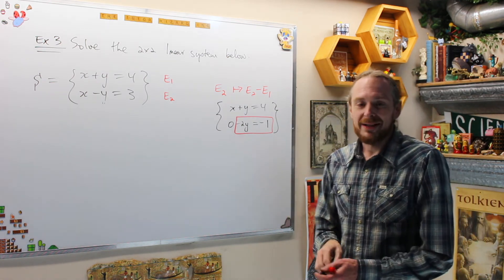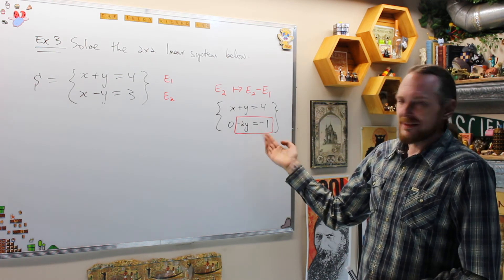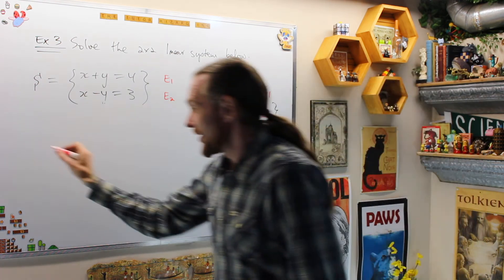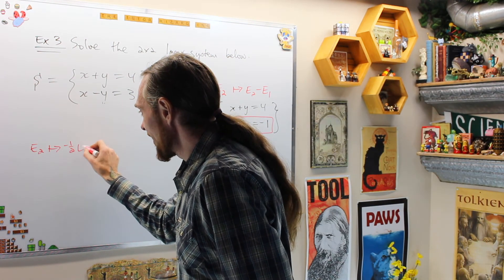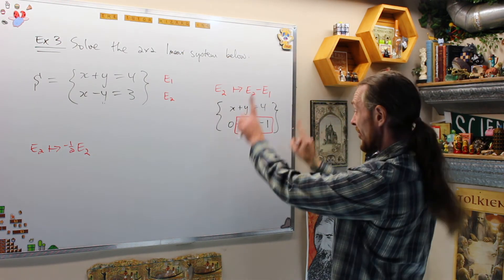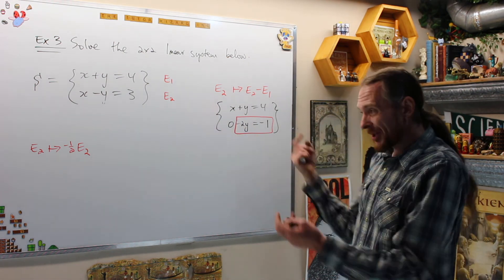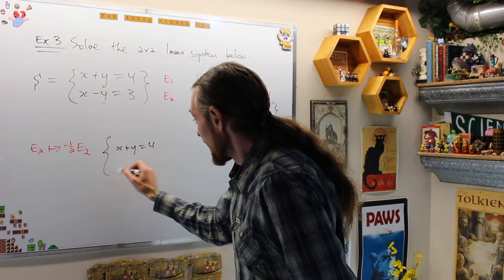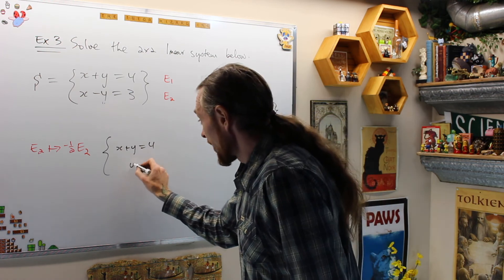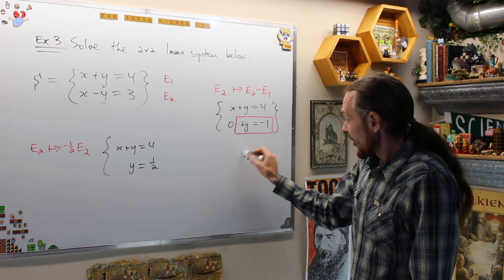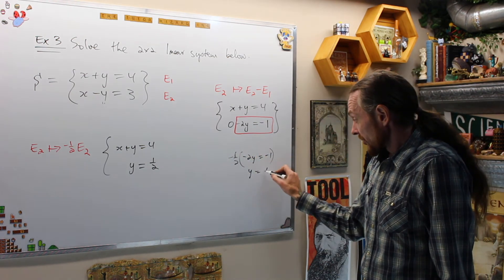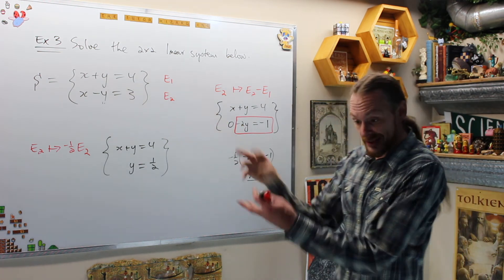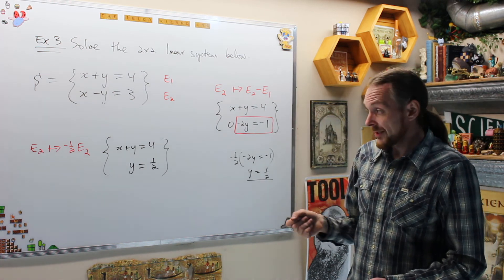To see y by itself, we replace equation two with negative one half times equation two — multiplying both sides by negative one half. That gives us a new equivalent system: x plus y equals four, and y equals one half. We've done two moves and can now read off what y is directly, without back substitution.